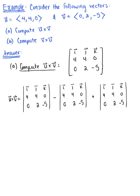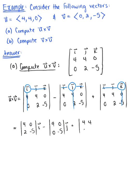So the first term is positive, the second term will be negative, and the third term is positive. We need to obtain the submatrices for each of our standard unit vectors. To do that, we eliminate the adjacent row and adjacent column in each case. This leaves us with that 2 by 2 matrix, 4, 0, 2, negative 5, times i hat, minus the submatrix 4, 0, 0, negative 5, times j hat, plus the submatrix 4, 4, 0, 2, times k hat.